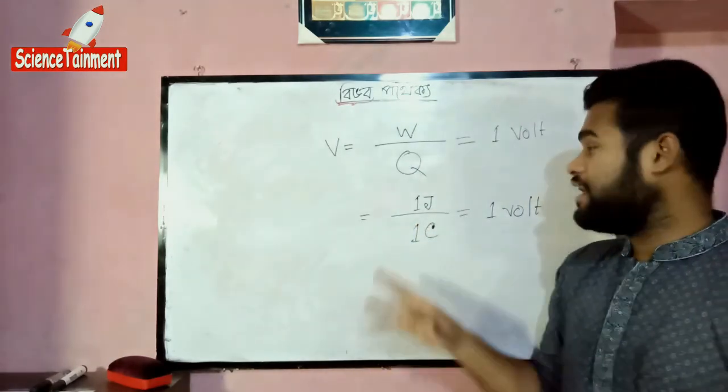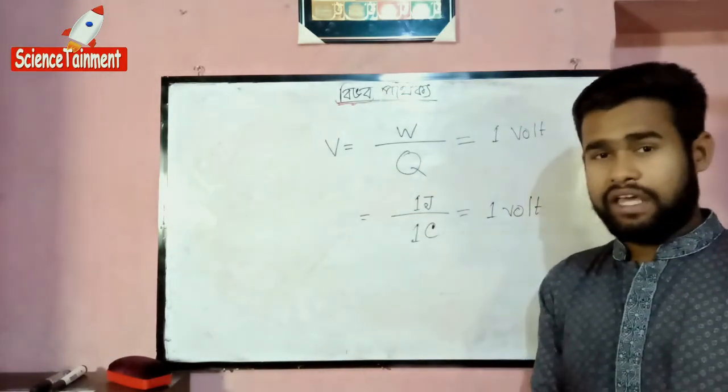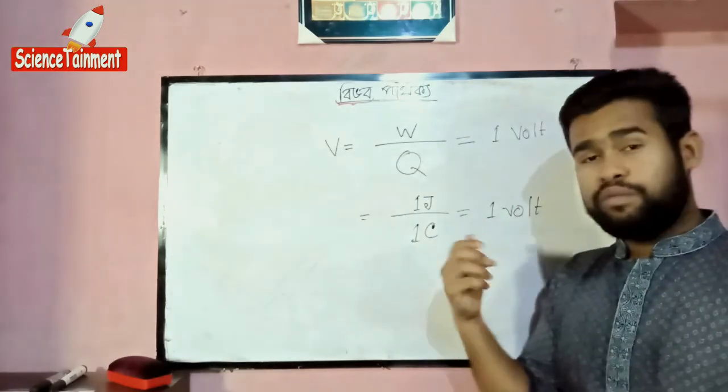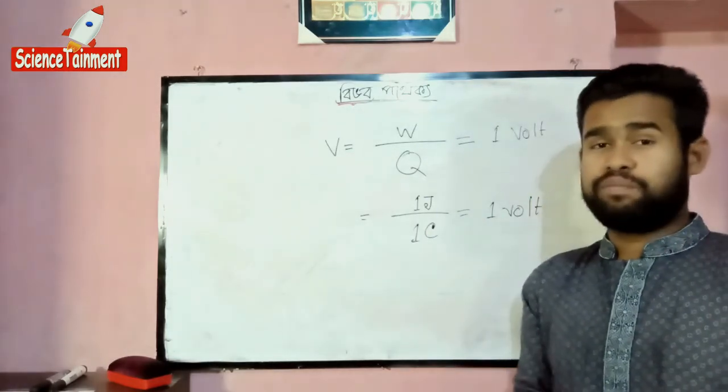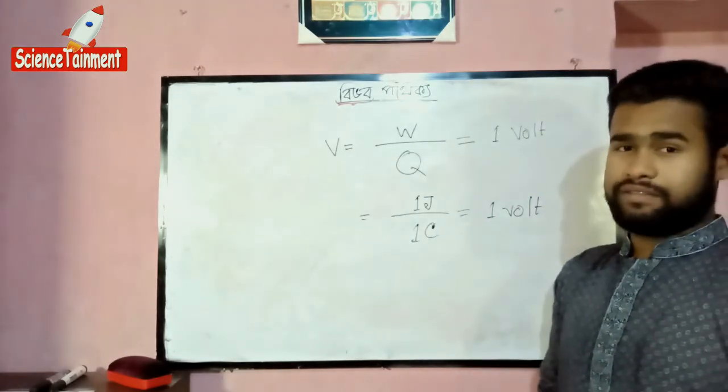We will add 1 Joule of work for 1 Joule. Then we will get 1 V — that is 1 Volt.